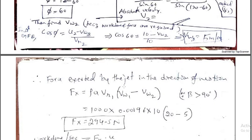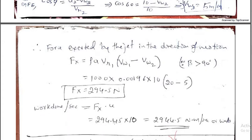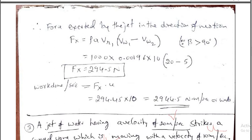Next, the force exerted by the jet: Fx equals rho A Vr1 into (Vw1 minus Vw2), where I am writing minus because beta is more than 90 degree. Substitute all the values to get Fx. Work done equals Fx into U. Substitute and you get the answer in watts or Newton meter per second. If they ask for power, it is Fx into U divided by 1000.